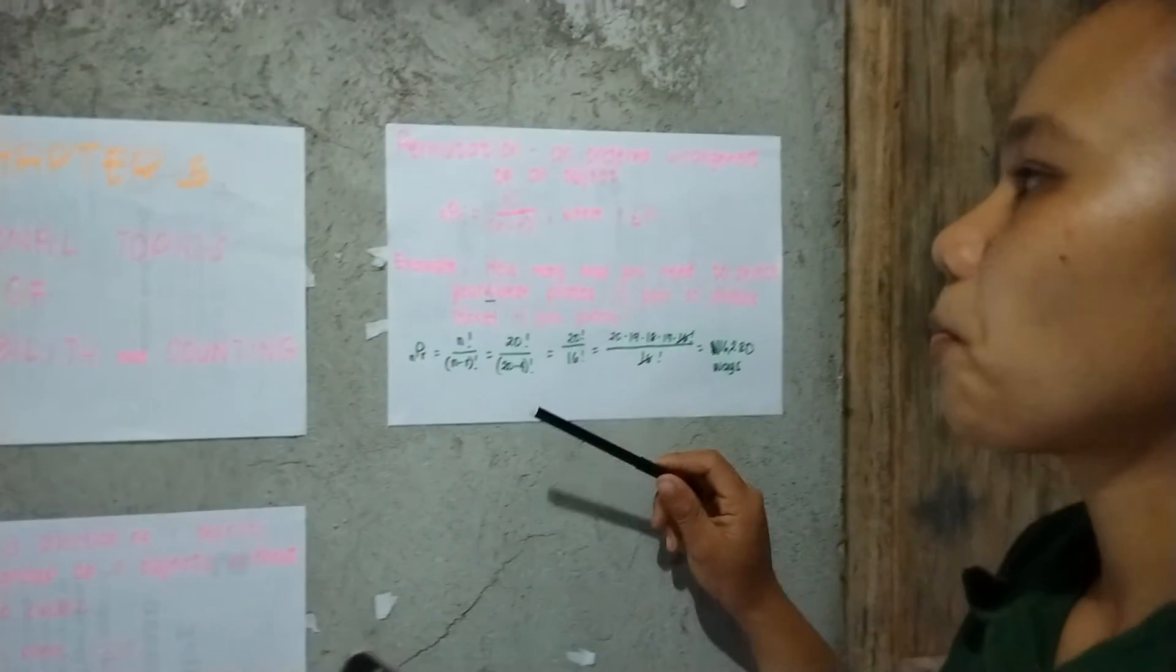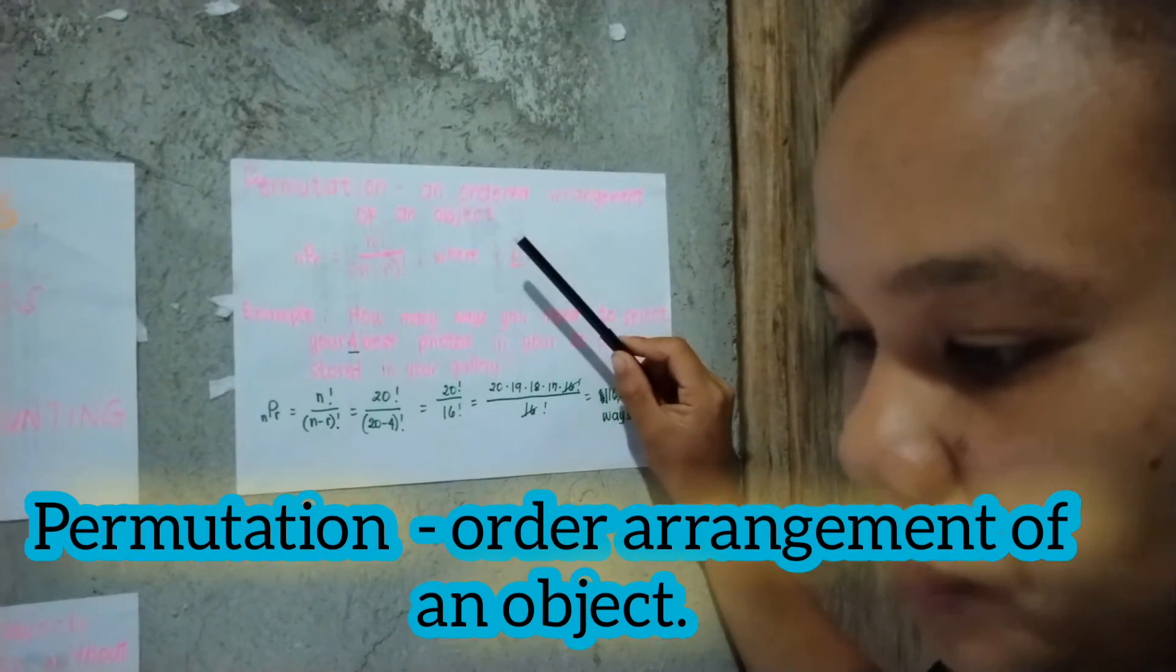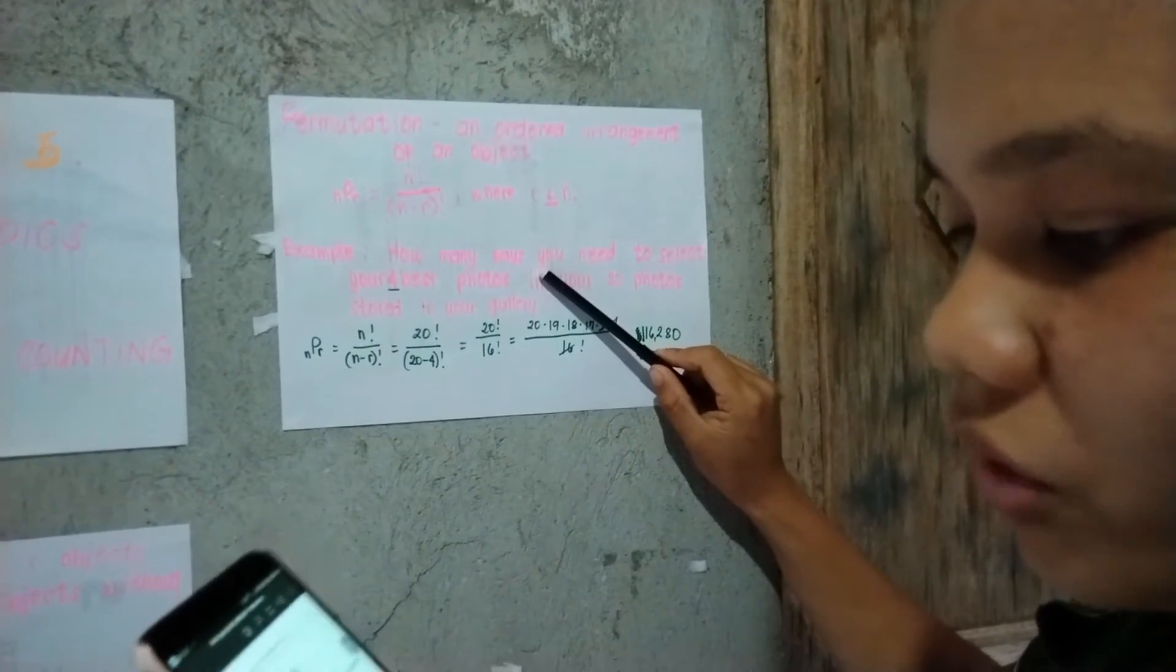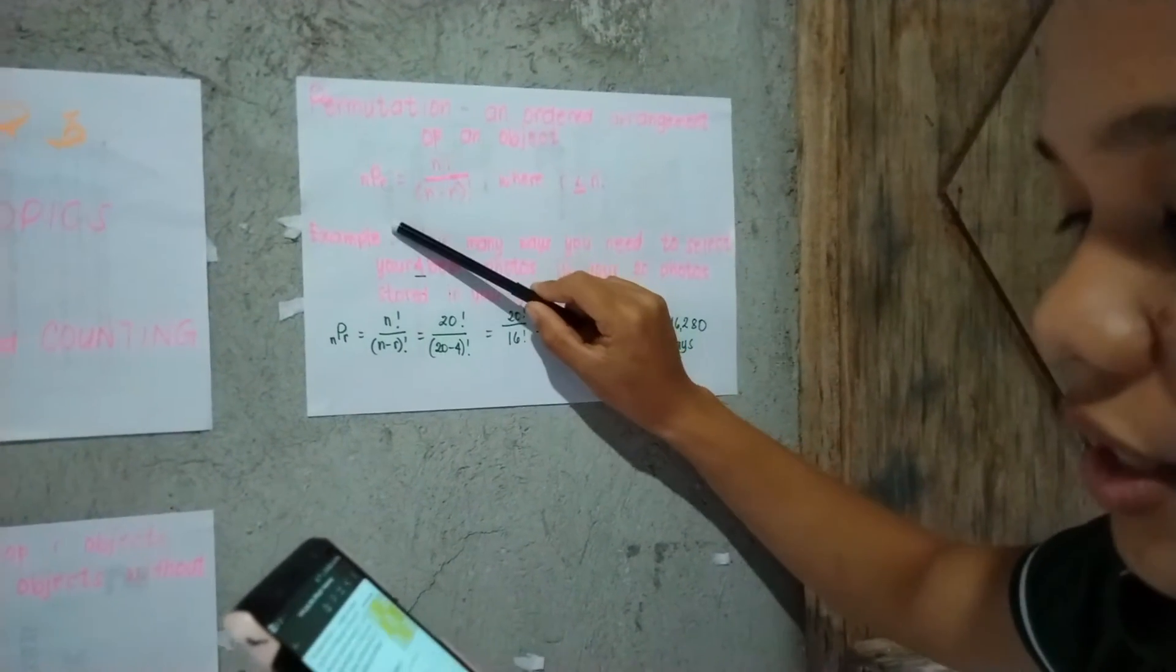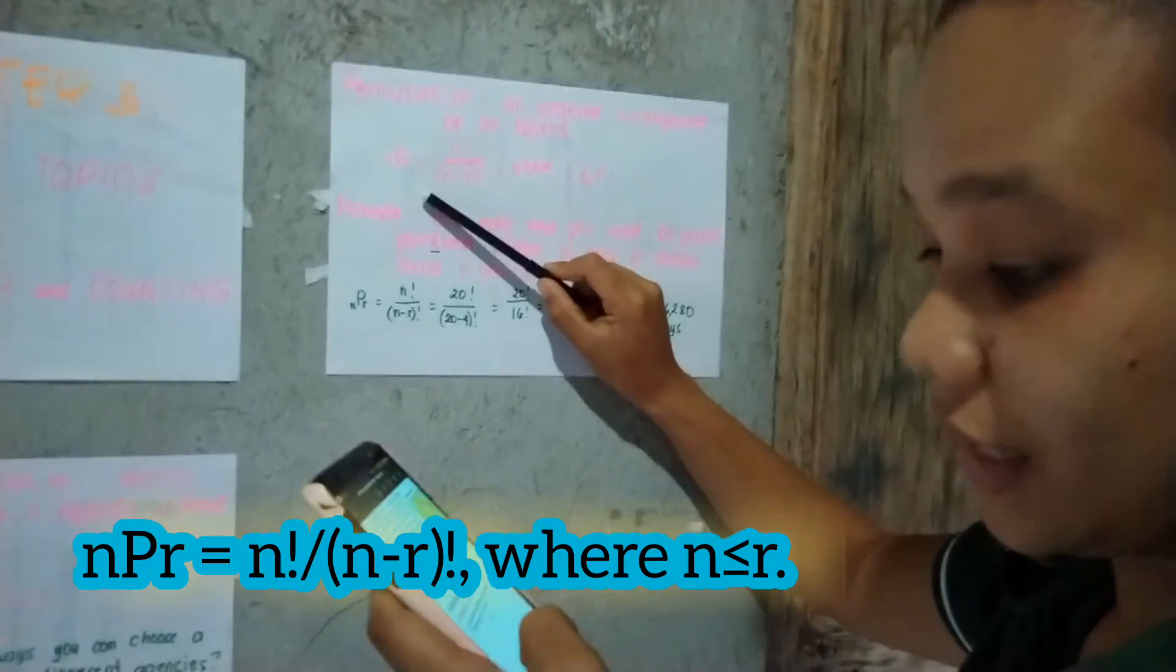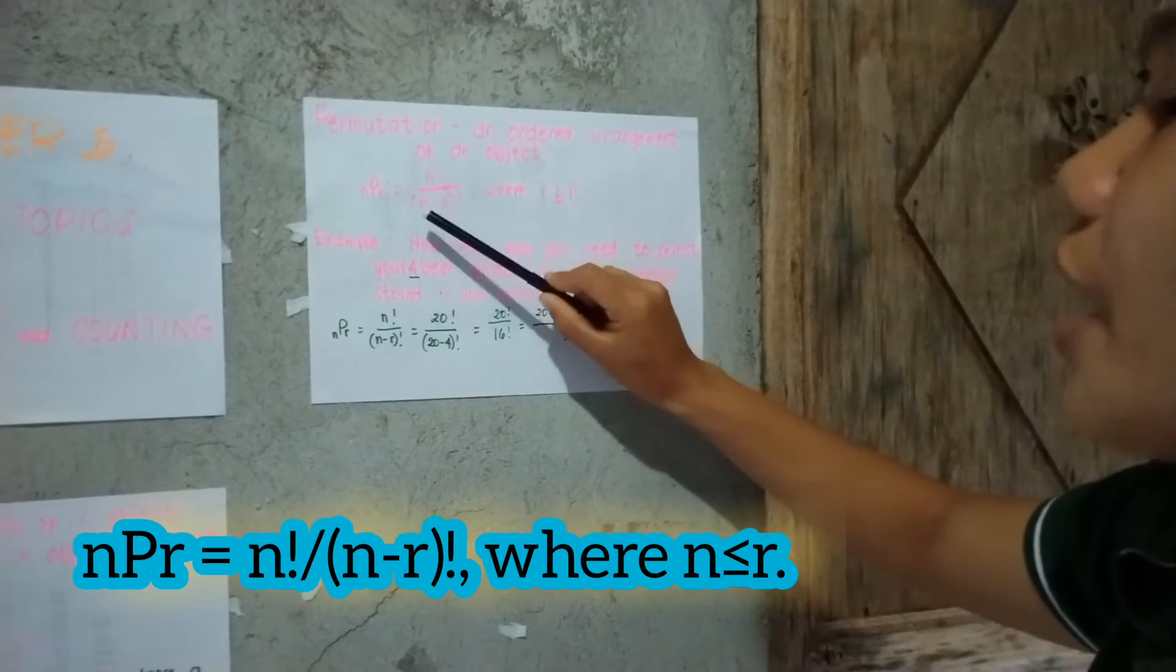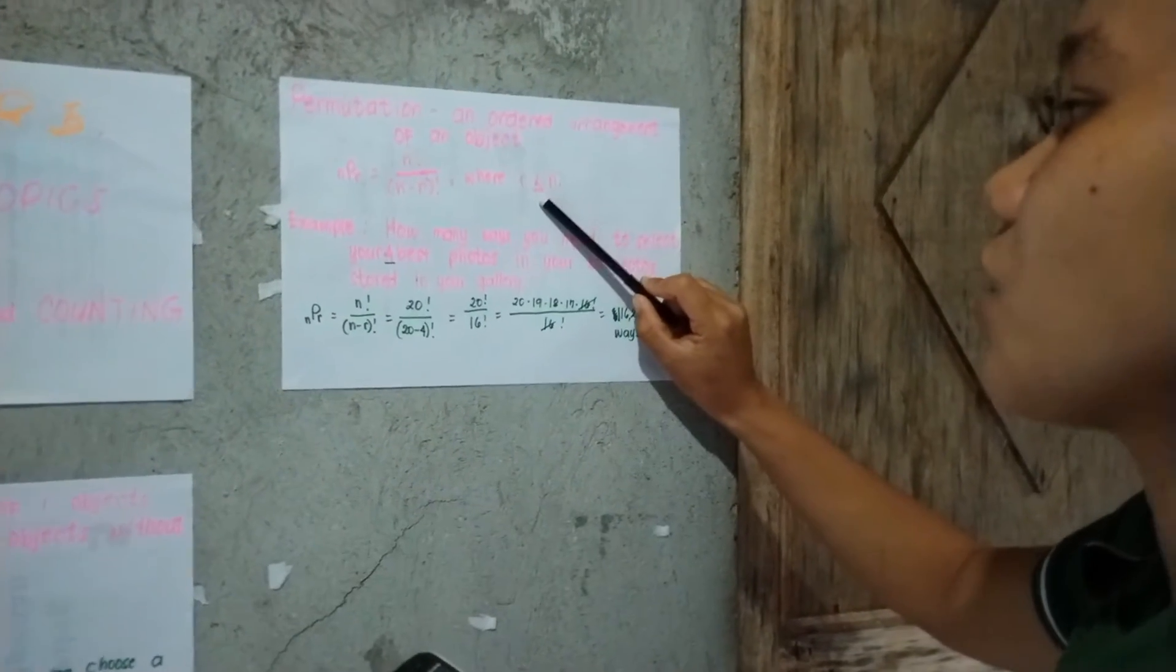Permutation is an arrangement of objects. The number of different permutations of n distinct objects is n factorial. The number of different permutations of n distinct objects taken r at a time, nPr, equals n factorial over (n minus r) factorial, where r is less than or equal to n.